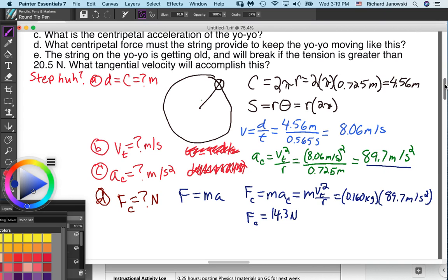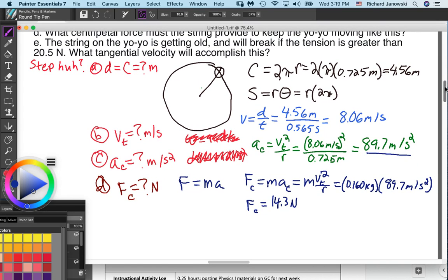Now for the last part. Parts A, B, C, and D all dealt with the same situation. Part E is different. We're dealing with the same yo-yo with the same radius, but now we're going to swing it around at a different rate. Our question is, the string on the yo-yo is getting old and will break if the tension is greater than 20.5 newtons. So what tangential velocity will accomplish this? You have to think of part E as being a slightly different situation. We're trying to solve for V tangential in meters per second.